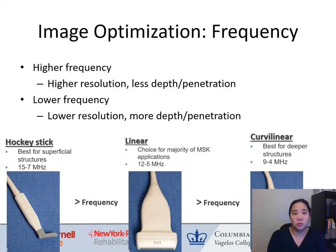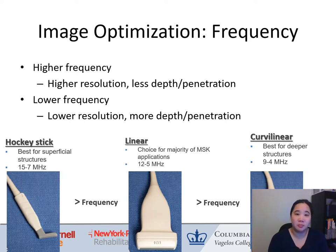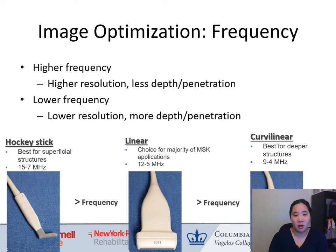Now we'll cover specific ultrasound features to optimize your image. Frequency: the higher the frequency, the higher the resolution but less depth penetration — best for superficial structures. The highest-frequency probe is the hockey stick, useful for hand and wrist. Lower frequency has lower resolution but more depth penetration, best for deeper structures — the curvilinear probe is typically used for the hip. The most common probe for musculoskeletal applications is the linear probe, which sits between the hockey stick and curvilinear in frequency.